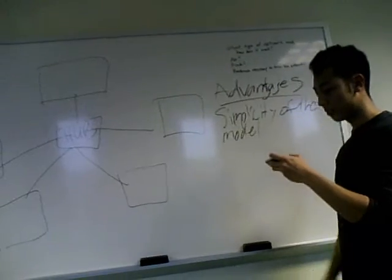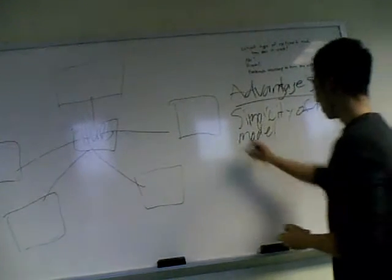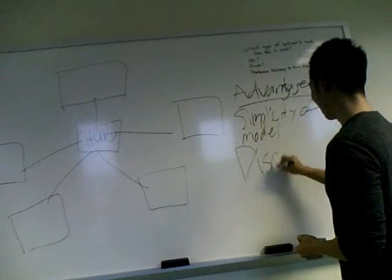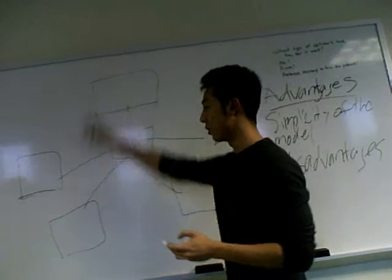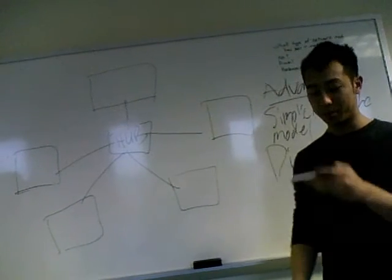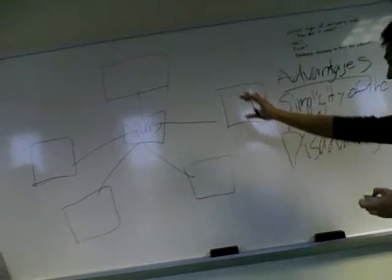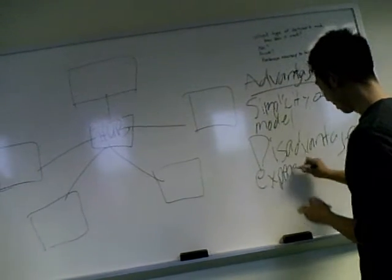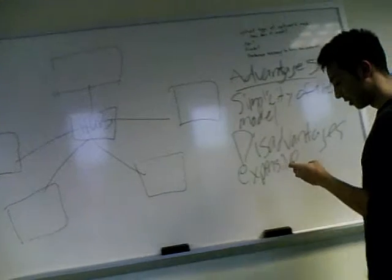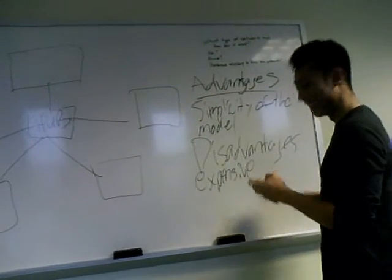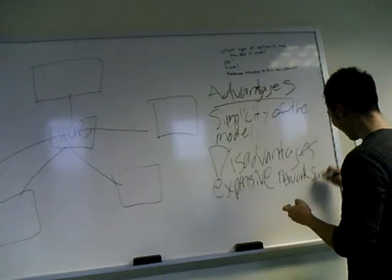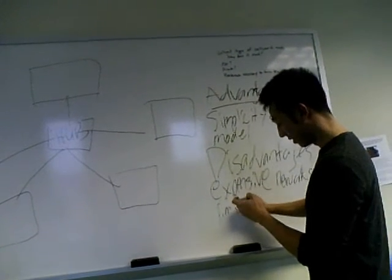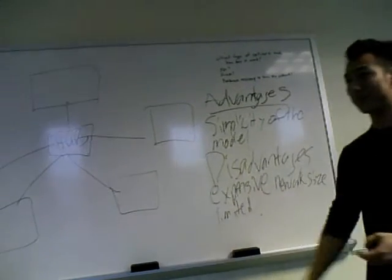What happens if the central hub breaks down? Well, that's a disadvantage. If the hub stops operating, it renders all the other nodes inoperable. Also, this is expensive — it's expensive because there's so much cabling.